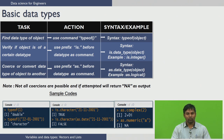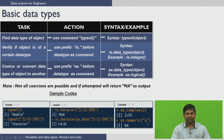You can also coerce a numeric variable into a complex variable using as.complex(). For example, as.complex(2) converts the numeric value 2 into the complex variable 2+0i. Attempting to coerce a character into a numeric variable using as.numeric(a) returns NA, meaning coercion from character to numeric is not possible.